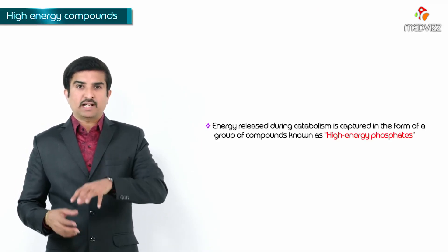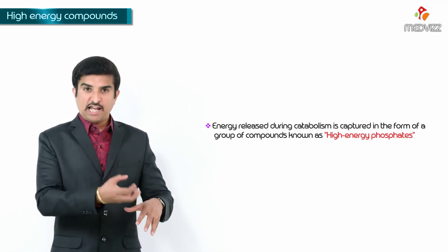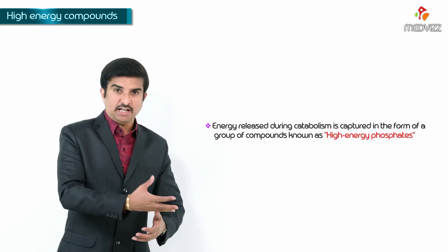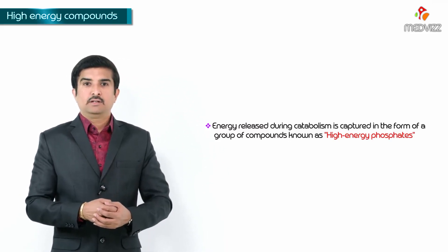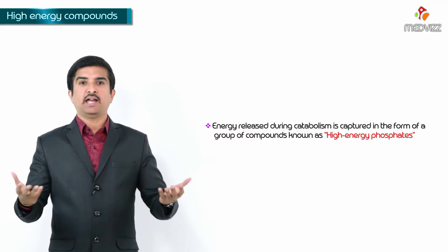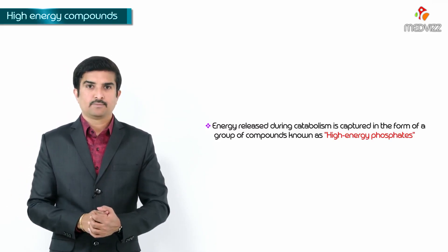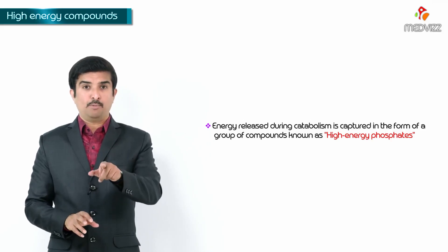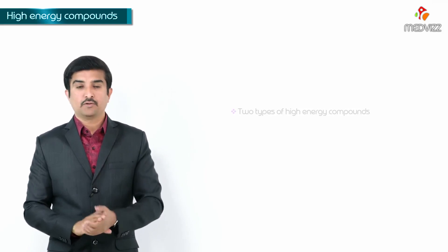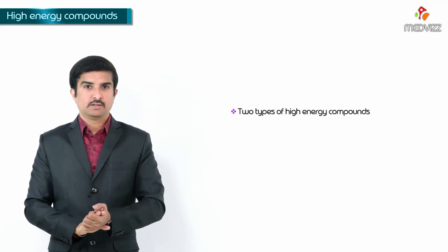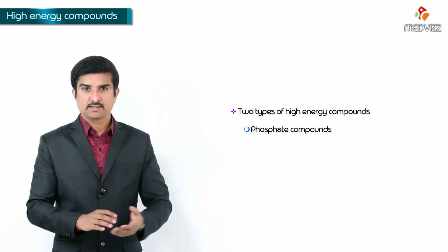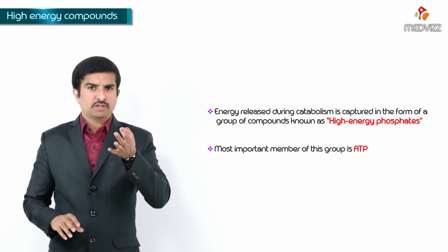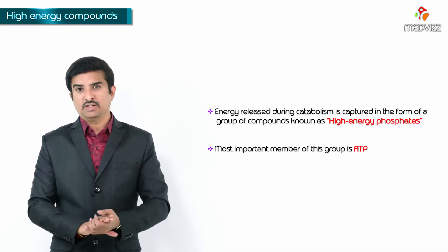The energy released during the catabolic process is captured — that is, energy released in the form of heat is captured in the form of a group of compounds known as high energy phosphates. Not only high energy phosphates, we also have high energy compounds belonging to the sulfur group. So we have two types: compounds belonging to phosphates and compounds belonging to the sulfur group. The most important member is ATP, adenosine triphosphate.